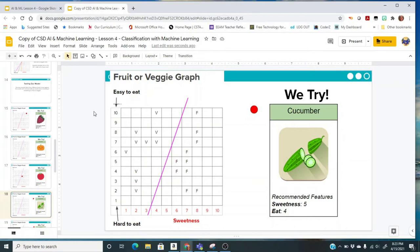Let's go to the next one. We're going to try cucumber. If you've tasted a cucumber, you can come up with your own sweetness and eat. I think cucumbers are actually pretty easy to eat, so I would give it a good number. But we're going to go with 5 and 4, and it puts it just barely in the fruit range.